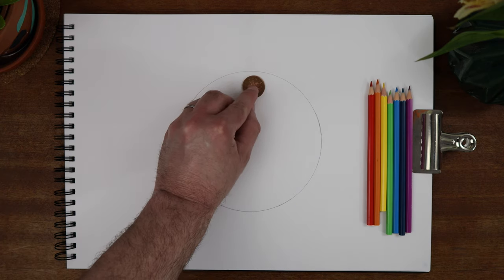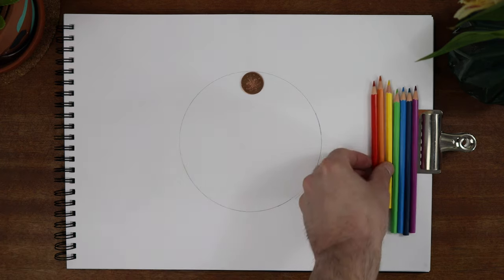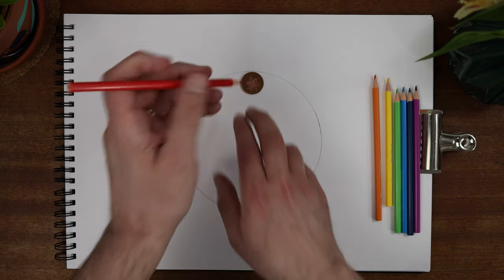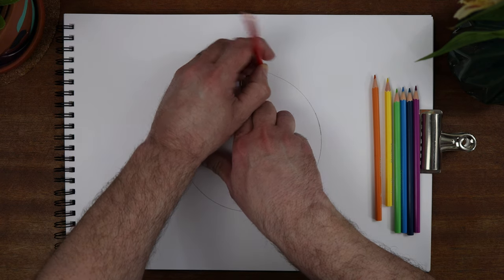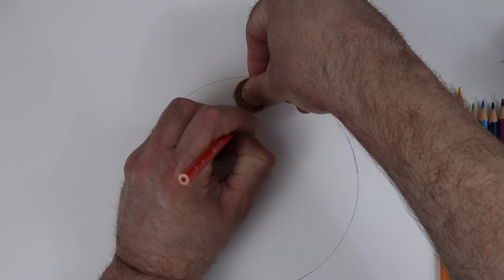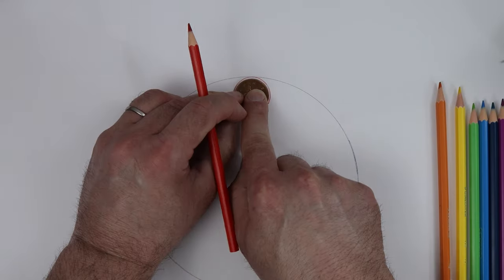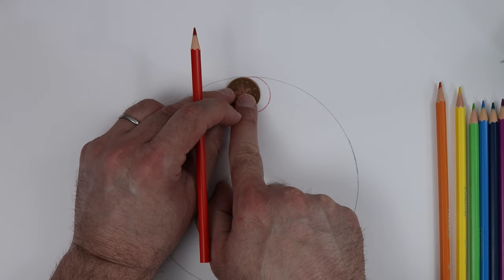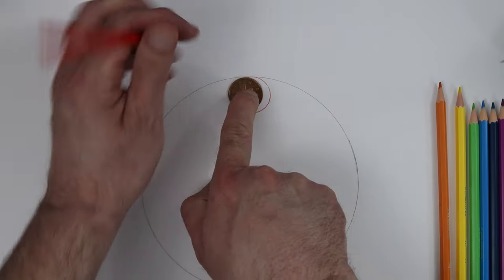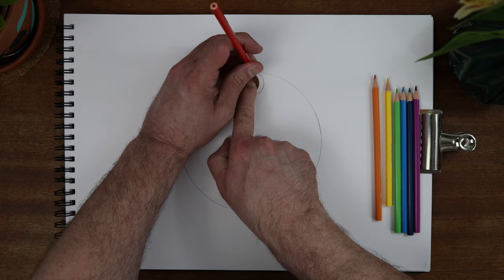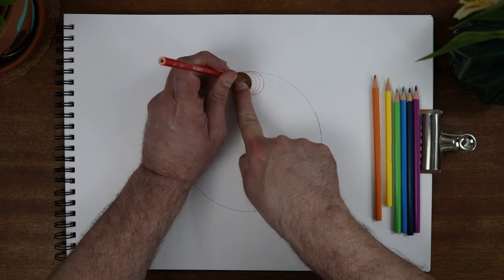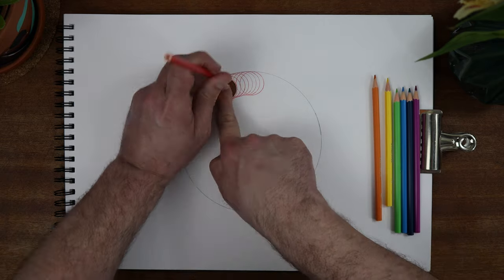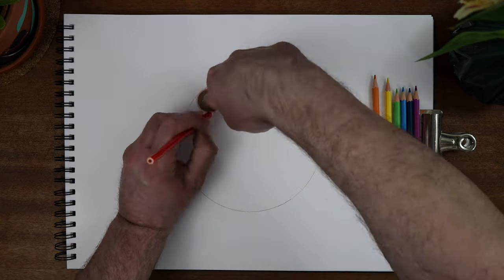Place your coin on the inside edge of the circle then draw around it with the color of your choice. If like me you're using rainbow colors then start with the red. Move the coin along just a little bit then draw around it again. Keep doing this all the way around and change your color as you go. Easy!